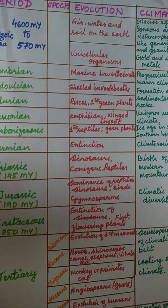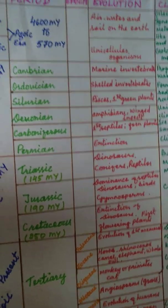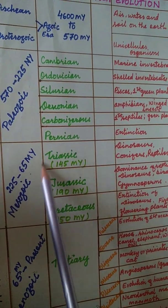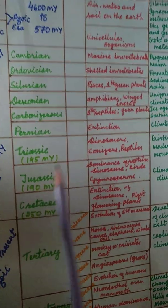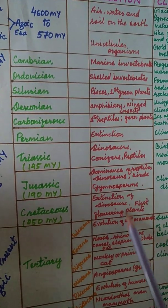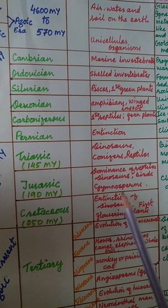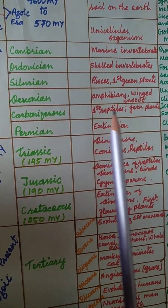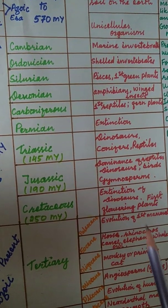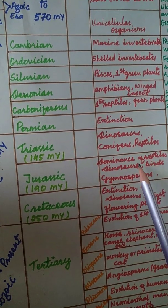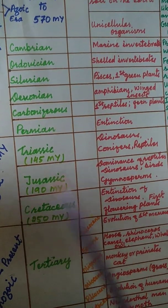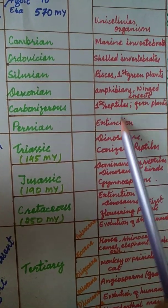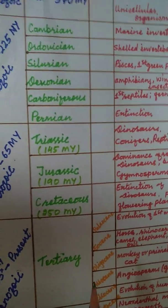For examination purposes, you mainly need to study the eras and the periods — Triassic, Jurassic, Cretaceous. There will also be questions about which organisms appeared in which era: for example, in which era did fish originate, in which era did angiosperms originate, gymnosperms, or fern plants (pteridophytes). These types of questions will come from the evolution column.